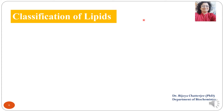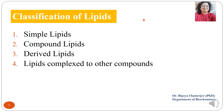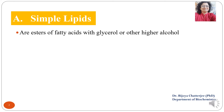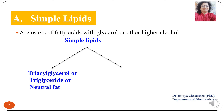Now we begin with the classification of lipids. Lipids are classified as simple lipids, compound lipids, derived lipids and lipids complex to other compounds. Simple lipids are esters of fatty acids with glycerol or higher alcohol. They are of two types: triacylglycerol or triglyceride or neutral fat, and waxes.